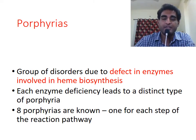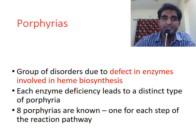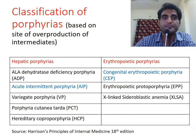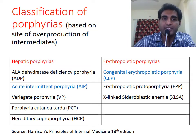Porphyrias are a group of disorders due to defects in enzymes involved in heme synthesis. There are eight steps in heme synthesis, and defects in each of these enzymes leads to a distinct type of porphyria.